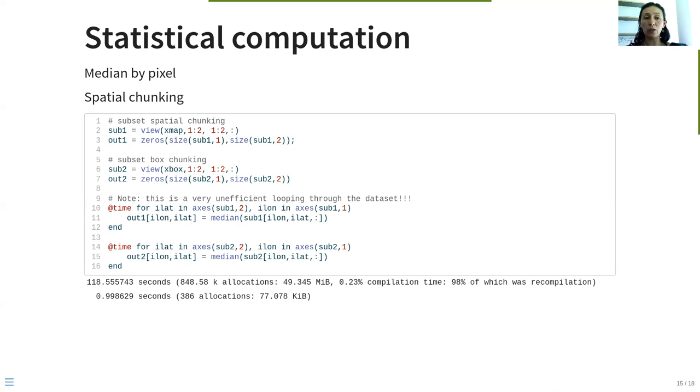To finish, we are going to compute the median by pixel, and this process is much more computational demanding, so we are doing a subset of four pixels. We observe here that the computation of the median is very slow. It takes around two minutes for four pixels when we use the spatial chunking, while when we use the box chunking is less than one second.